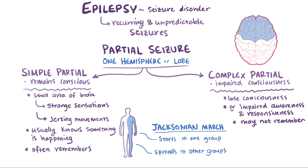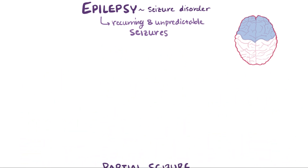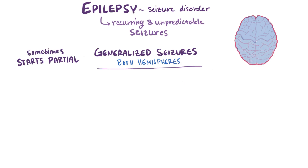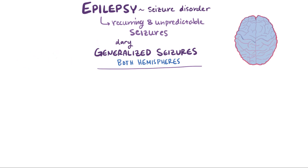In contrast to the partial or focal seizure, a generalized seizure is where both hemispheres of the brain are affected. Sometimes a seizure will start out as a partial seizure and then quickly develop into a generalized seizure — in those situations it would be called a secondary generalized seizure, because the partial seizure came before it and was the primary event. Just like partial seizures, there are subcategories of generalized seizures as well.